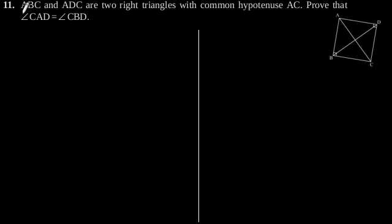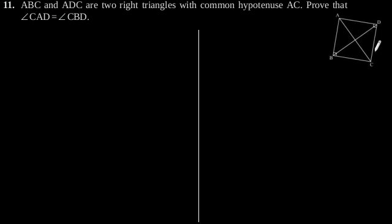Exercise 10.5, Question number 11. ABC and ADC are two right triangles with common hypotenuse AC. Prove that angle CAD is equal to angle CBD. Suppose this is our required figure based on the information given in the question.